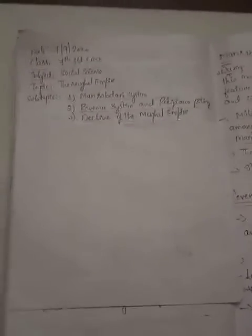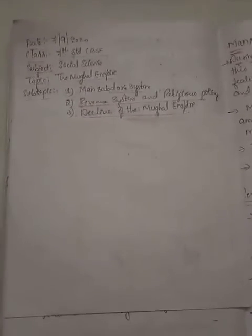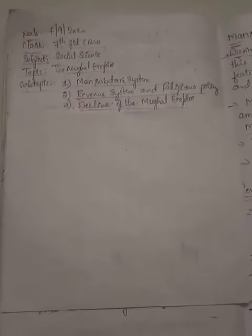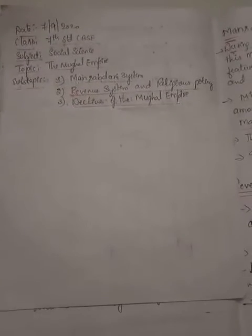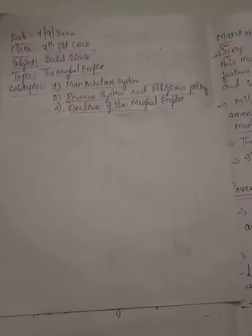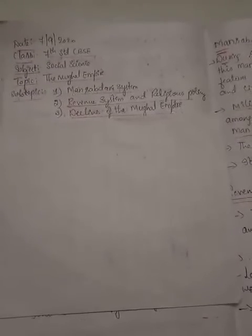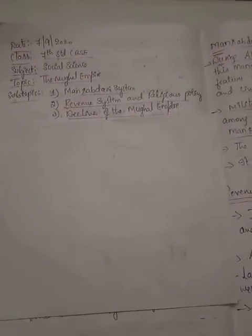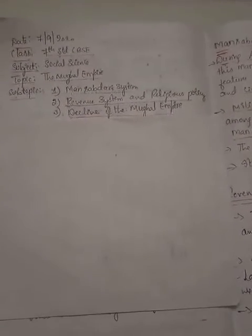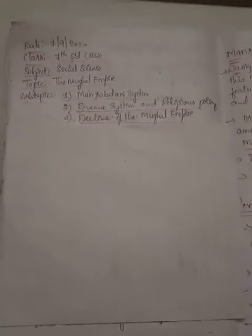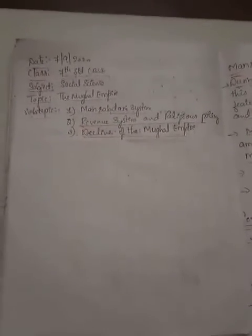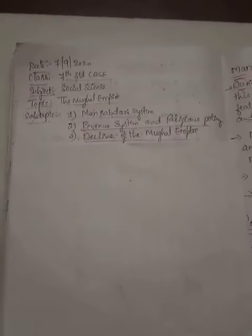So far we studied the rulers of the Mughal Empire like Babur, Humayun, Akbar, Jahangir, Shah Jahan, and Aurangzeb. In the previous class video lesson we had discussed about Aurangzeb.